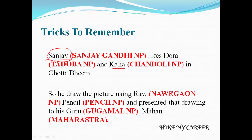Dora means Tadaba National Park. And Kaliya — Doli, Kali — so Kaliya means Chandoli National Park. So Sanjay likes Dora and Kaliya in Chhota Bheem. Kaliya means Chandoli National Park.